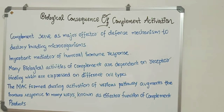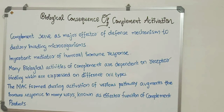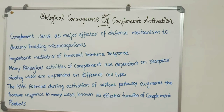Complements serve as major effectors of defense mechanism to destroy invading microorganisms. We know that C3B binds with B cells, and these B cells help in the secretion of antibodies, which destroy the invading microorganisms. This is also part of the innate immune system, and the complement serves as an important mediator of humoral immune response.